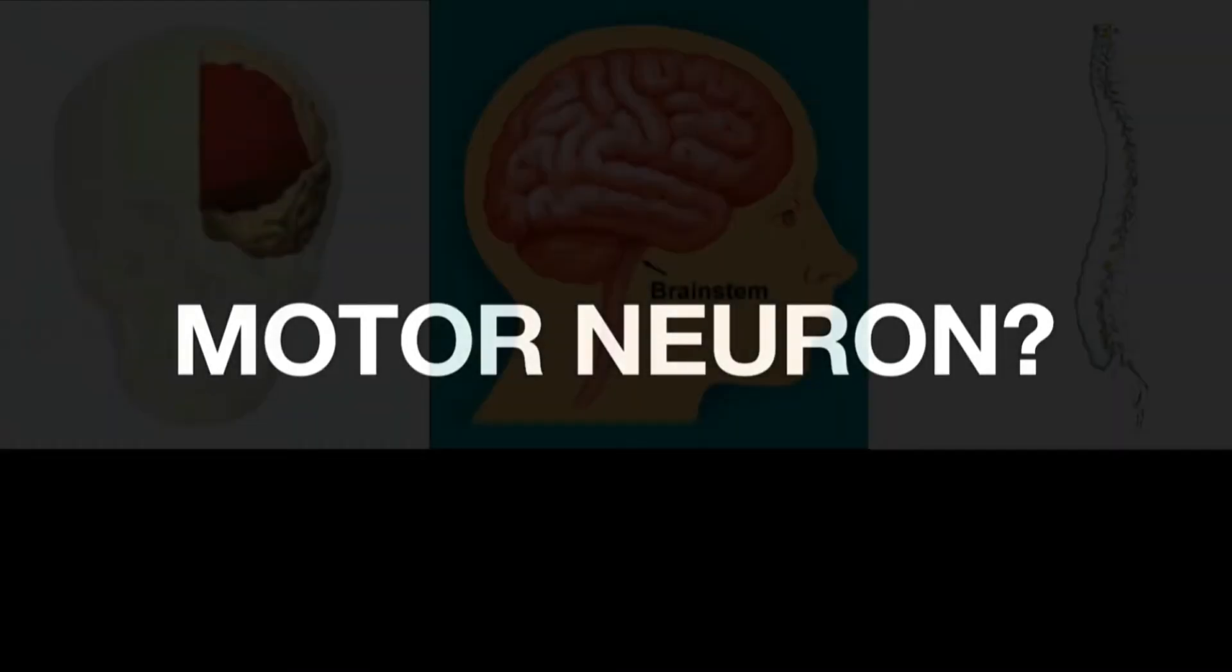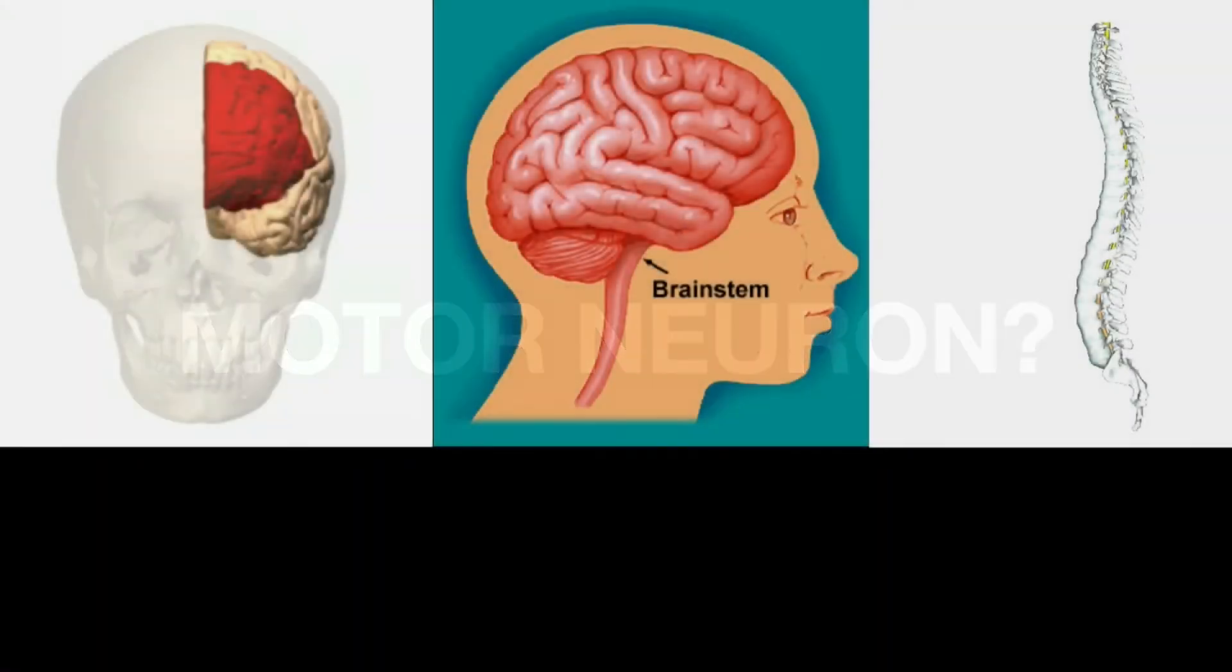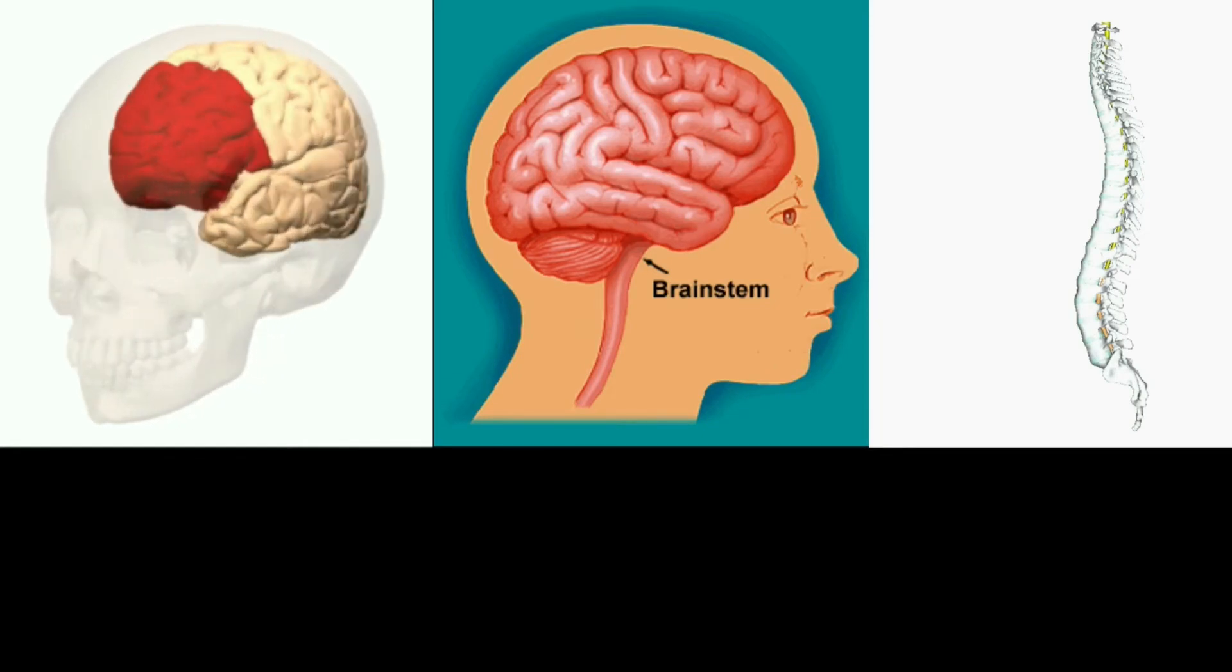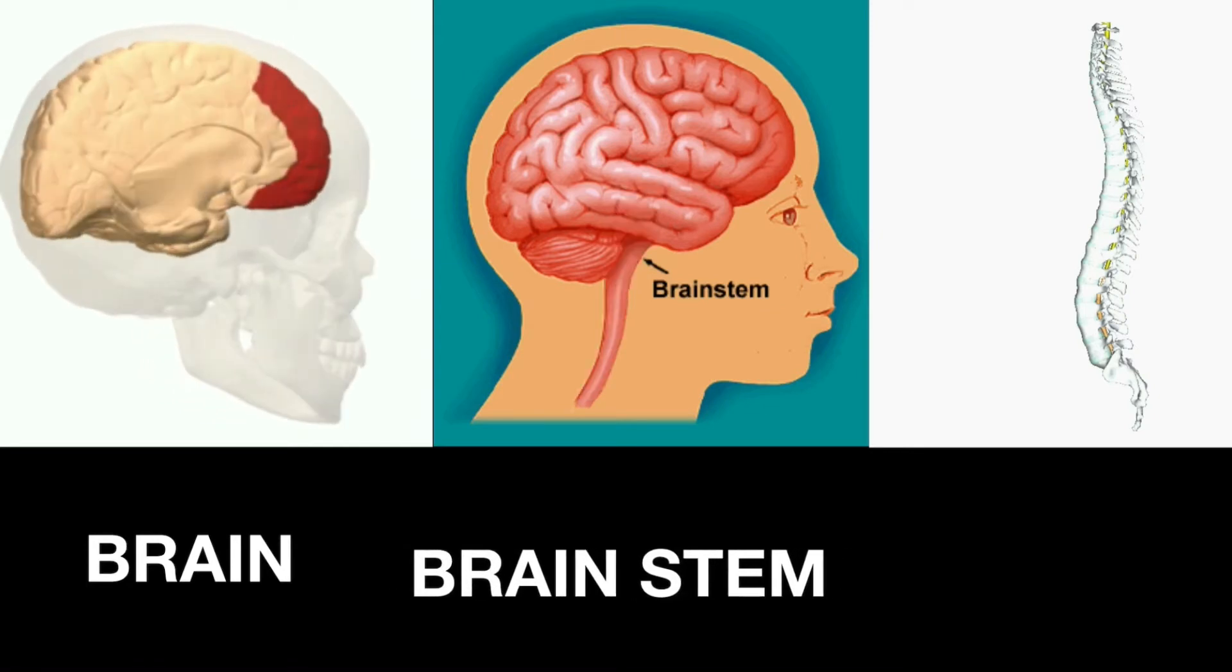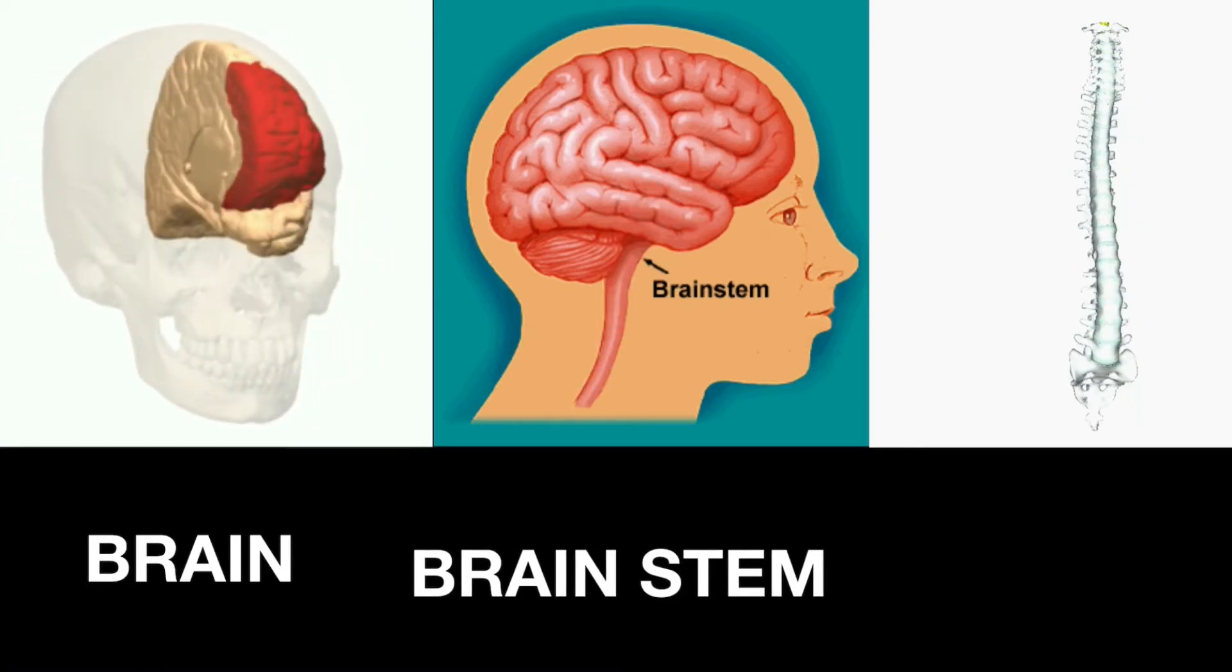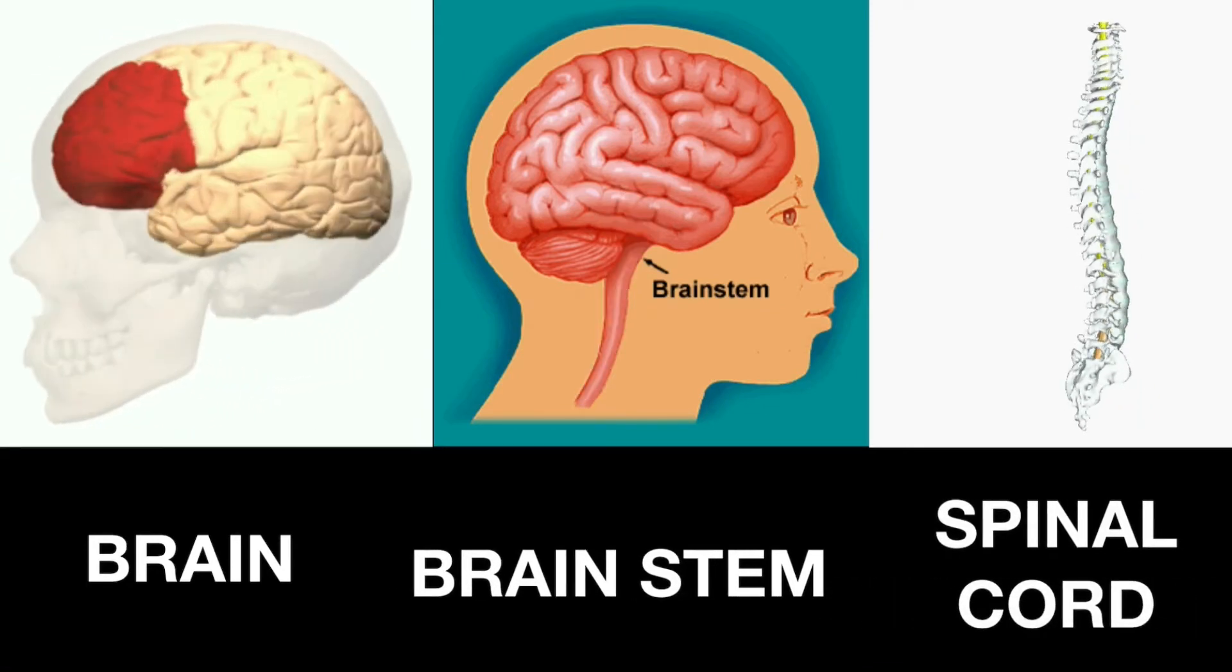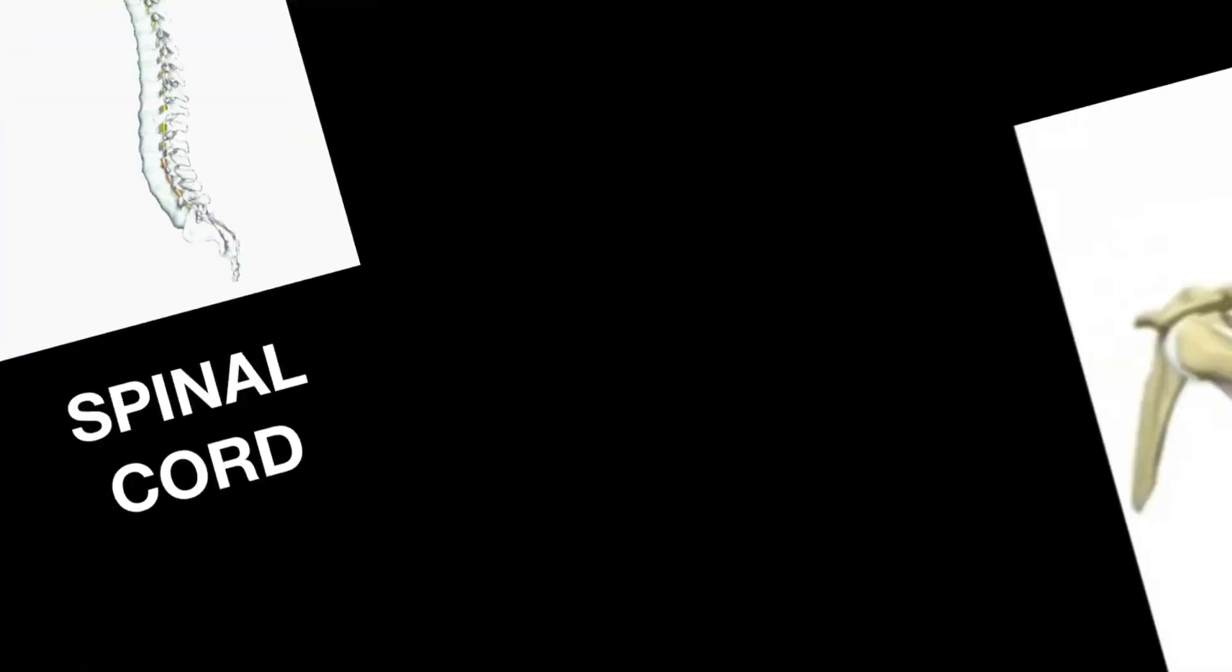Let us see what is a motor neuron. Motor neuron is a neuron whose cell body lies either in the motor cortex of the brain or in the brain stem or in the anterior horn of the spinal cord. Its main function is that it controls the movement of the muscles.